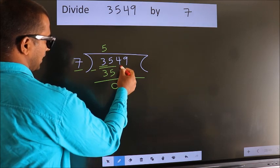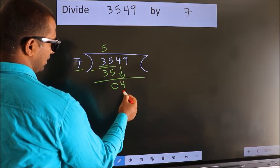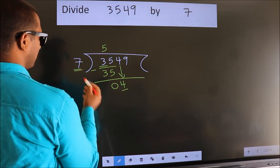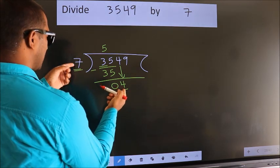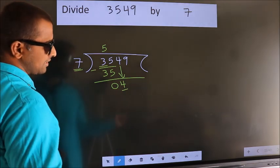After this, bring down the beside number. So 4 down. Here we have 4. Here 7. 4 smaller than 7. So we should bring down the second number.